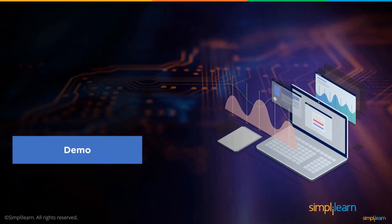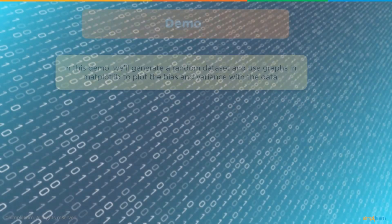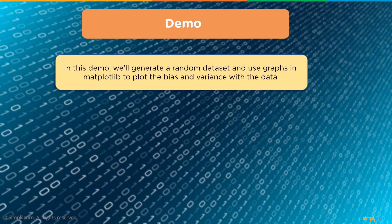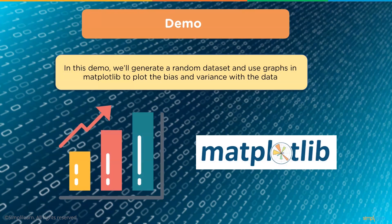Let's take a look at a hands-on demo. We'll generate a random data set and use graphs and matplotlib to plot the bias and variance with the data. We'll be using Python, going through Anaconda and Jupyter for the demo because it provides a nice inline display.